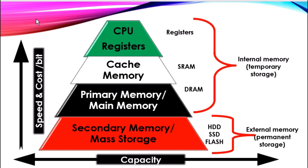We can also see the temporary memory and the permanent memory with their respective examples. At the bottom of the diagram, we have the secondary memory or mass storage. These are external, non-volatile memories that can hold data even without power. They have high storage capacity but are very slow compared to primary memory. The three main types of secondary memory are magnetic storage — which includes hard disk drives — optical storage, where the floppy disk is a good example, and solid state drives.